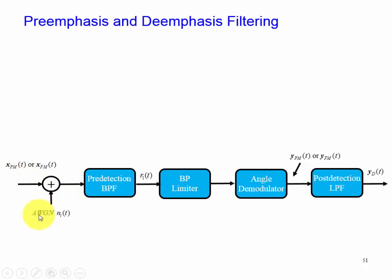So here's our block diagram once again: pre-detection bandpass filter, our bandpass limiter to limit the amplitude variation so that it doesn't incur any error signal in the angle.